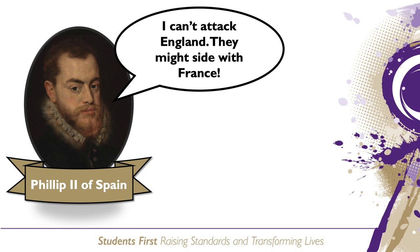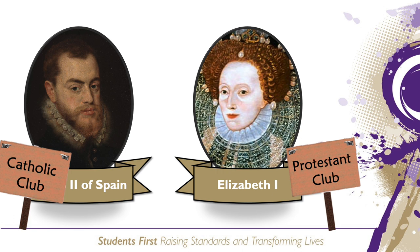Ultimately Philip did not want to go to war with England at the time, as he was concerned that any attack on England would lead to an alliance between England and France against Spain, which was something he wished to avoid. Religion was clearly a cause of declining relations as Philip and Elizabeth had very different religious views, and Philip as a devout Catholic believed that Catholicism should be restored. However, this was a long-term cause of the rivalry, and Philip lived with Protestant England for 25 years, so religion cannot be seen as the catalyst for war between the two nations.